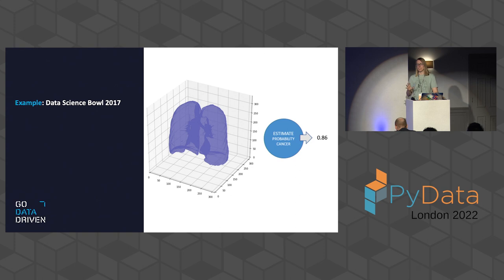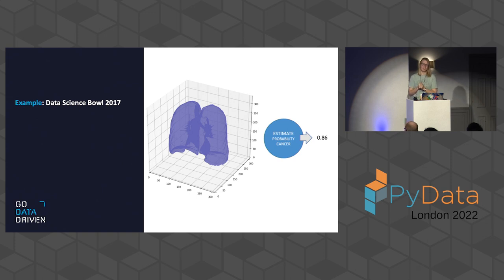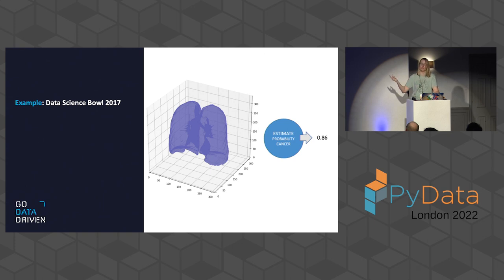A lung CT scan is actually a 3D volume — about 300 images of 500 by 500 pixels. The labels we were provided with was just: will this person get lung cancer or not? In practice, the amount of data we were given — 1,300 scans — is barely enough to solve that problem. And even with more scans, it's too complex to solve by simply feeding it into a convolutional neural network and getting a prediction.